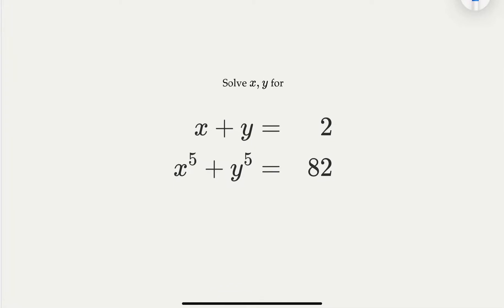We know the sum of two numbers equal to 2, and sum of the fifth power equal 82, for x and y.